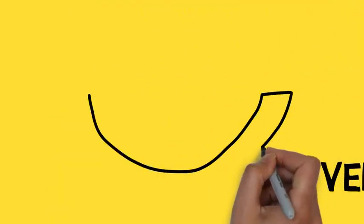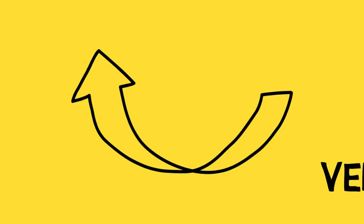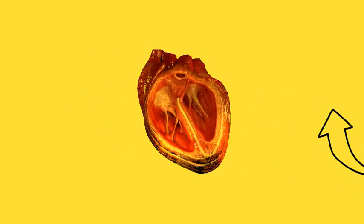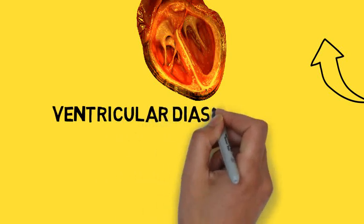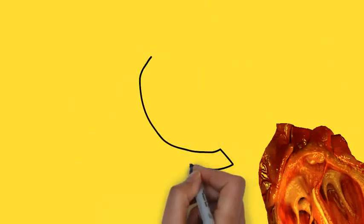Then it goes to ventricular diastole, the relaxation of the ventricles. Once the blood is pushed out, they start to relax to accept blood from the atria again. That's the early stage of ventricular diastole.